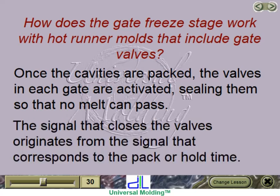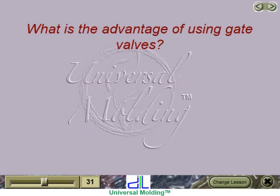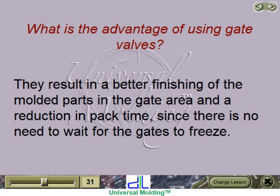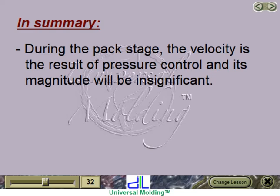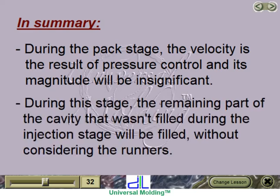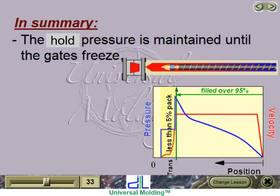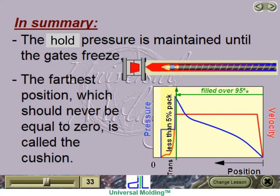The signal that closes the valves originates from the signal corresponding to the pack or hold time. The advantage of using gate valves is that they result in better finishing of the molded parts in the gate area, and a reduction in pack time since there is no need to wait for the gates to freeze. During the pack stage, the velocity is the result of pressure control and its magnitude will be insignificant. The remaining part of the cavity not filled during injection will be filled. The pack pressure is maintained until the gates freeze. The farthest position, which should never equal zero, is called the cushion.